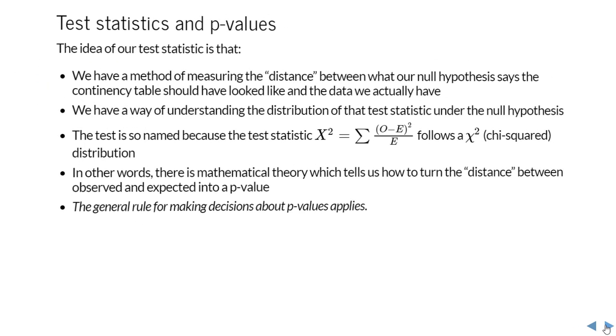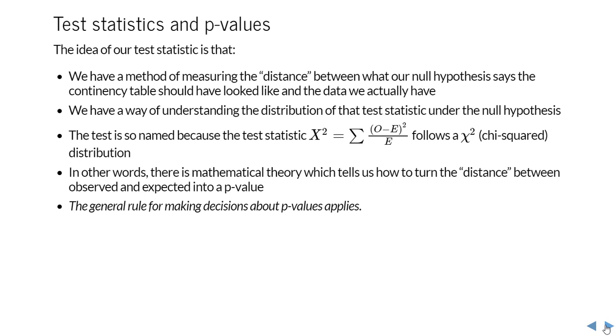What we need to do now is have some way of measuring how different—I've rather loosely called it distance—but how different is our actual set of summary statistics, our observed contingency table, from the expected contingency table. The reason we use the test that is called the chi-squared is because there is this test statistic where we take for any cell the observed value of that cell and subtract the expected value under the null hypothesis, square this, divide it by the expected value for that cell, and then repeat that calculation for every cell and add them up.